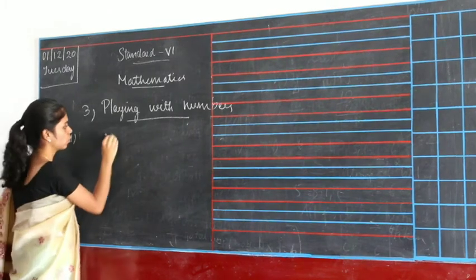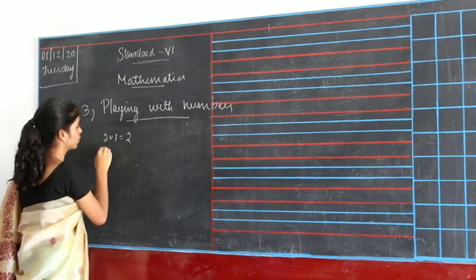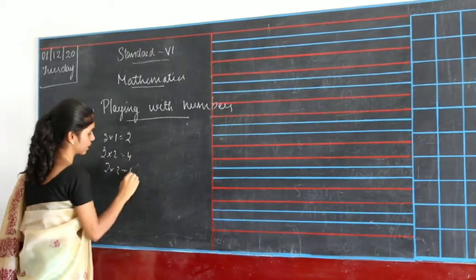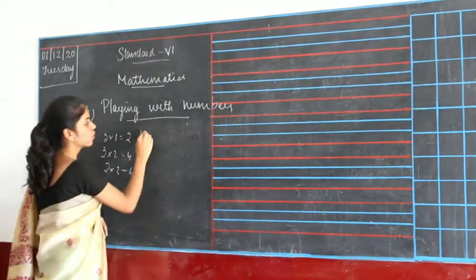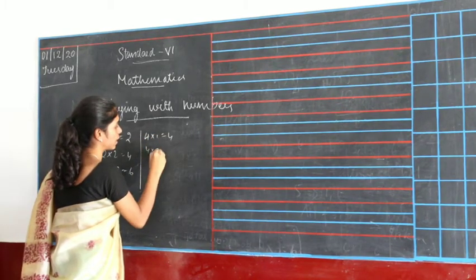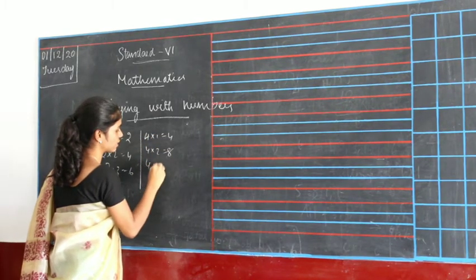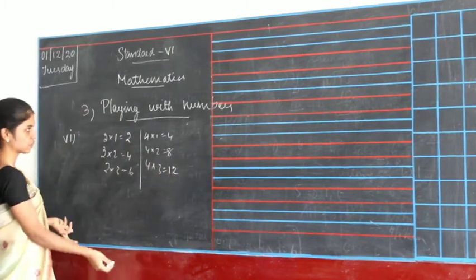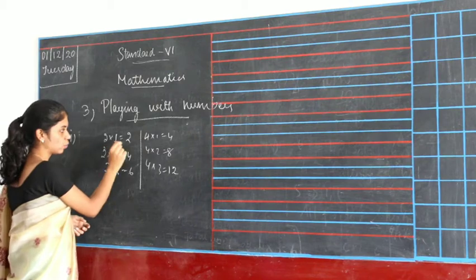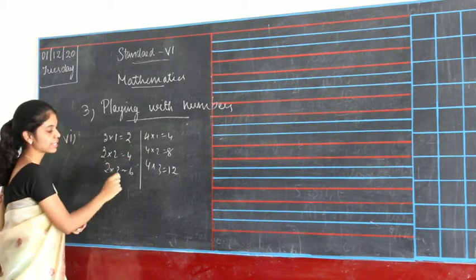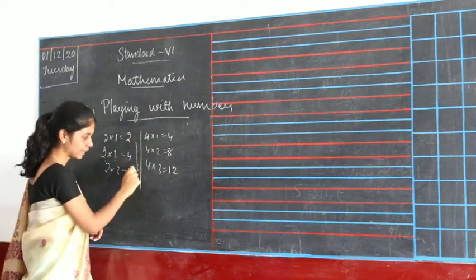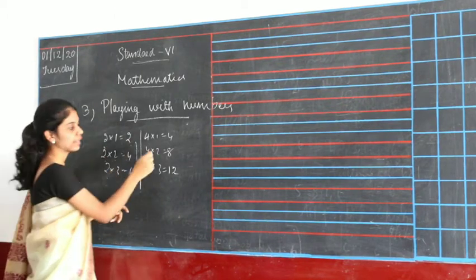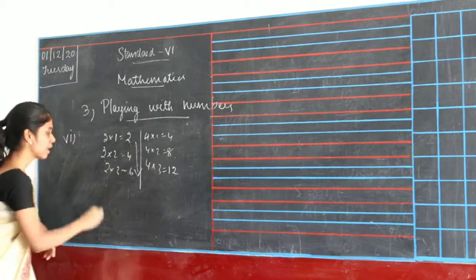The sixth property involves multiplication tables. For example: 2 ones are 2, 2 twos are 4, 2 threes are 6; and 4 ones are 4, 4 twos are 8, 4 threes are 12. If you see 2 into 1 is 2, 2 into 2 is 4, 2 into 3 is 6 — as the number increases, the multiples are also increasing.